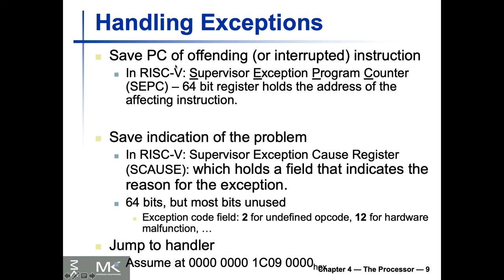There is also a jump instruction to handler — this is exactly our 'catch' here. When something happens we understand where it happened, what was the reason, and then what to do next. In this case we tell the program counter to start executing at this address. We don't want to crash and do nothing — we want to handle the exception and then carry on executing from the handler address.